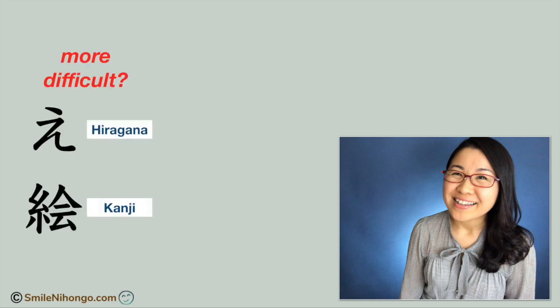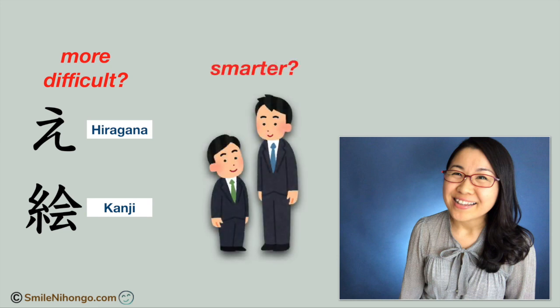Konnichiwa, Yuko-sensei desu. Today I'm going to teach you how to compare two options in Japanese. For example, you will learn how to say kanji is more difficult than hiragana, or person A is smarter than person B.